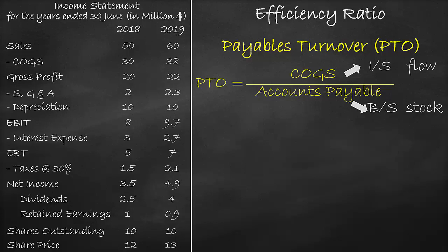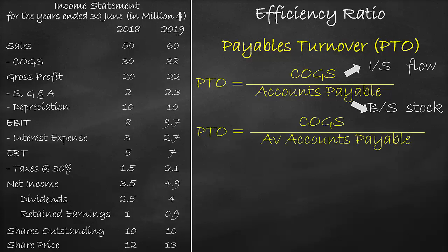So we can rewrite the payables turnover as the cost of goods sold divided by the accounts payable average. Let's calculate the payables turnover for the year 2018.